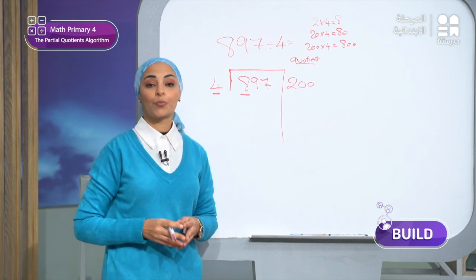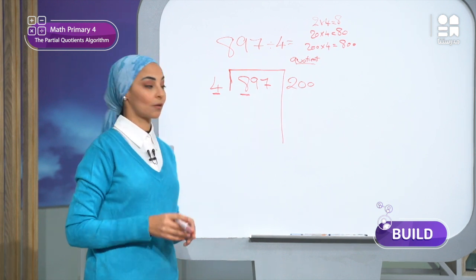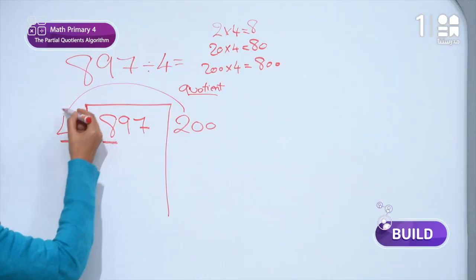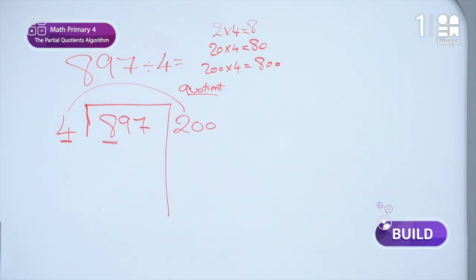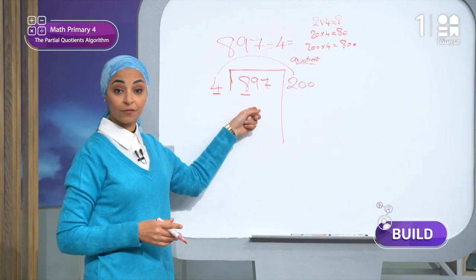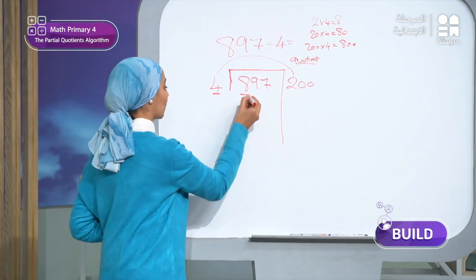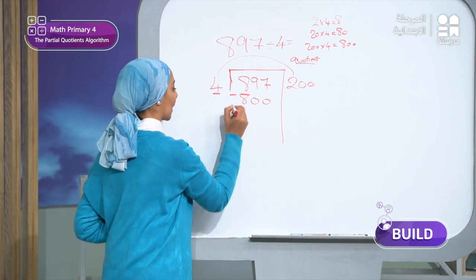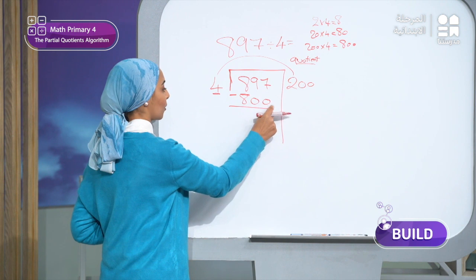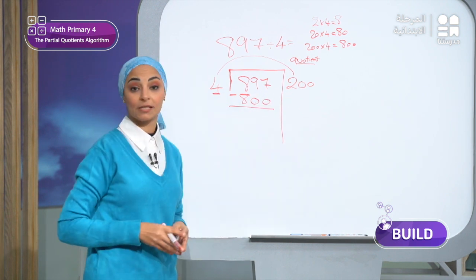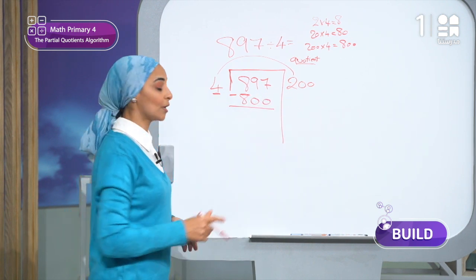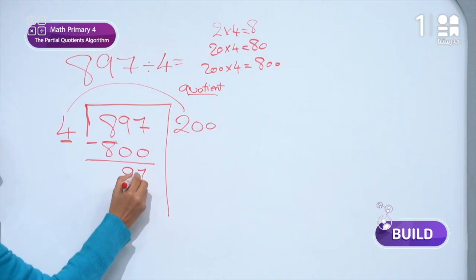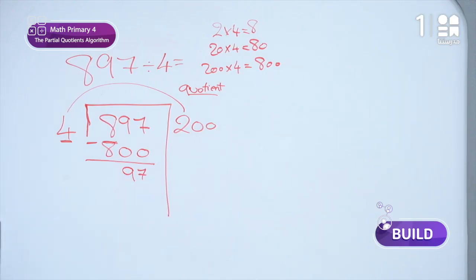Then we write the product of 200 times 4, which is 800, under the dividend. We subtract: 897 minus 800 equals 97. This is the first step, and 97 becomes our new dividend.